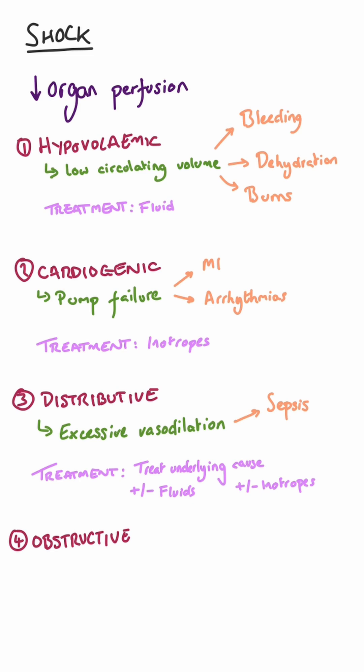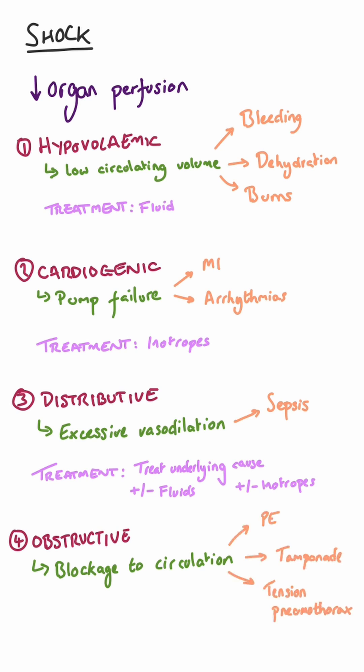In obstructive shock, there is a blockage to the circulation, with causes such as a pulmonary embolism, cardiac tamponade, or a tension pneumothorax. Treatment to resolve obstructive shock revolves around removing the blockage itself.